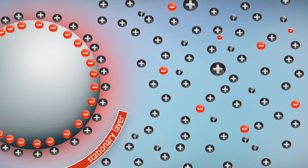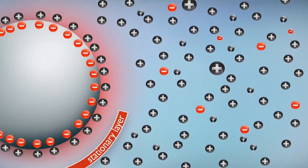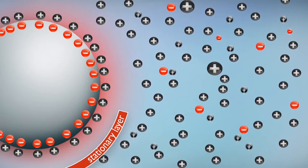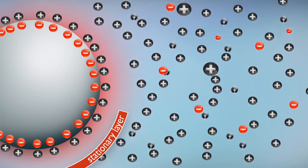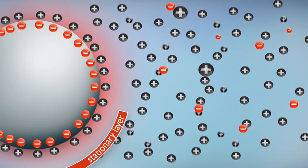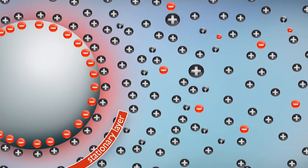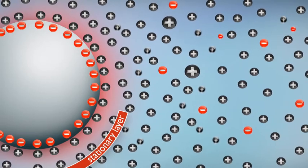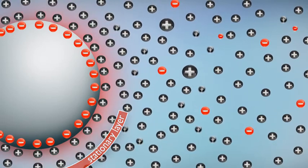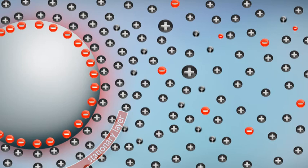This remaining anionic charge attracts further ions from the surrounding water, so that a second layer develops around the particle. This layer is further away from the particle's surface. The attractive force of the anionic charges get weaker with the distance, and therefore, this second layer is less ordered and movable.